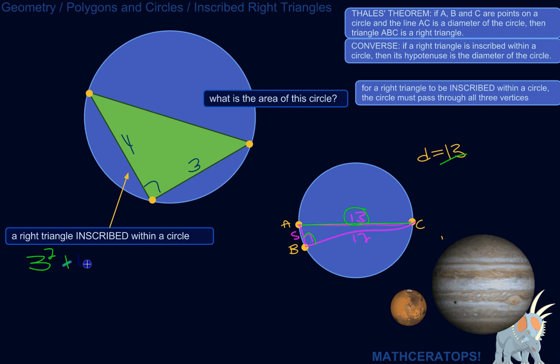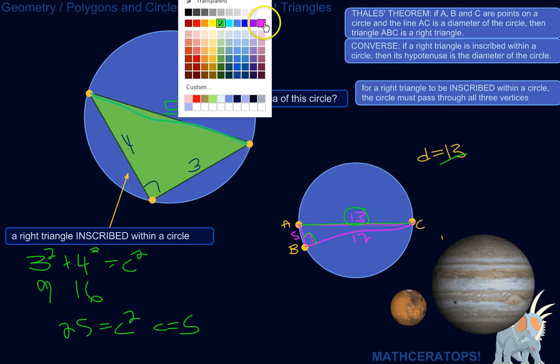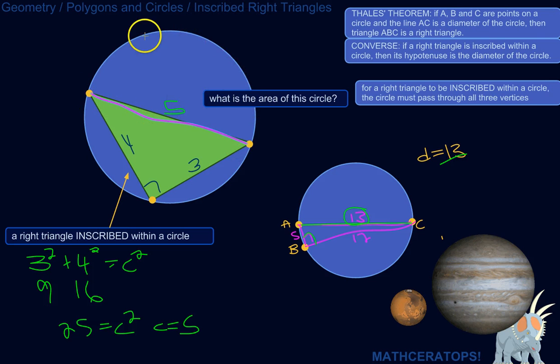3 squared plus 4 squared equals c squared. 3 squared is 9, 4 squared is 16. 9 plus 16 is 25, so c is equal to 5, the square root of 25. That's the diameter by the converse of Thales' theorem. The hypotenuse of a right triangle inscribed within a circle is also the length of the diameter.